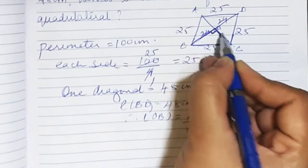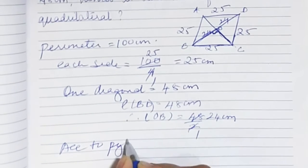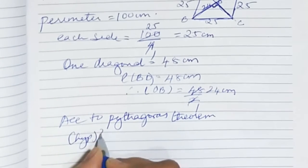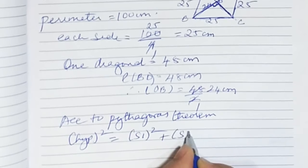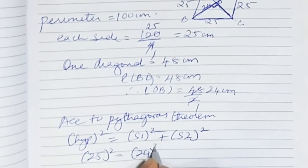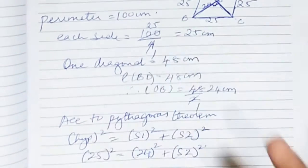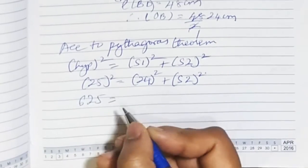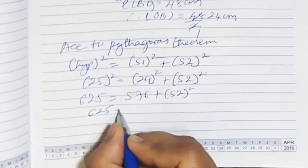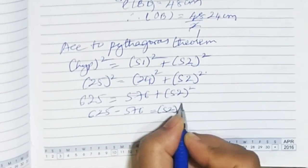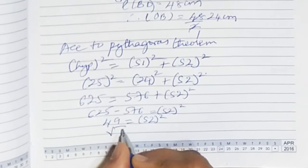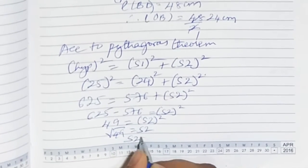According to Pythagoras theorem, hypotenuse square equals side 1 square plus side 2 square. Hypotenuse is 25, so 25 squared equals 24 squared plus side 2 squared. That is 625 equals 576 plus side 2 squared. Therefore 625 minus 576 equals side 2 squared, giving 49. The square root of 49 is 7, so side 2 is 7 centimetres.